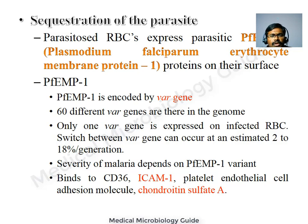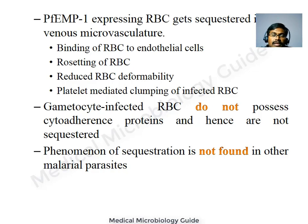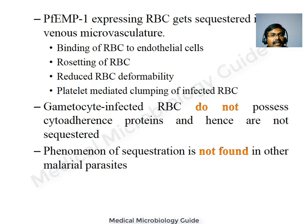PfEMP1 can bind to CD36, intracellular adhesion molecule-1 (ICAM-1), platelet endothelial cell adhesion molecule, and chondroitin sulfate A. Sequestration in the microvasculature occurs through: binding to receptors on endothelial cells; infected RBCs attaching to non-infected RBCs to form rosettes that block the microvasculature; reduced deformability of infected RBCs; and platelet-mediated clumping of infected RBCs. Gametocytes and ring forms do not express PfEMP1 and hence are found in peripheral smears.